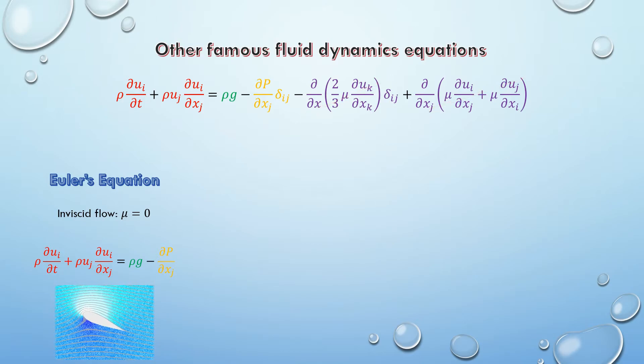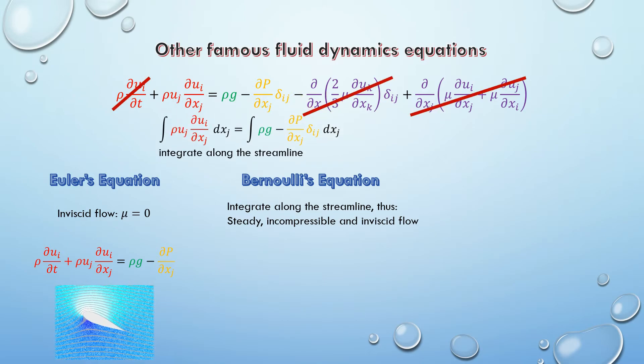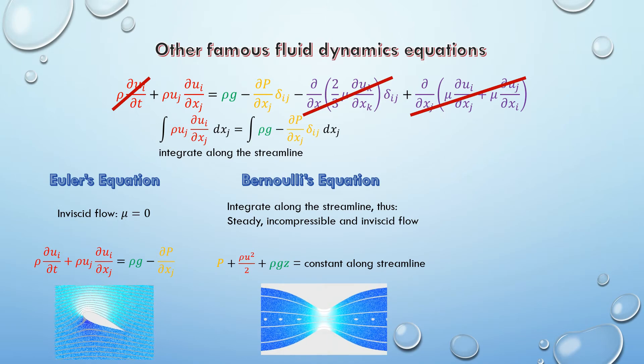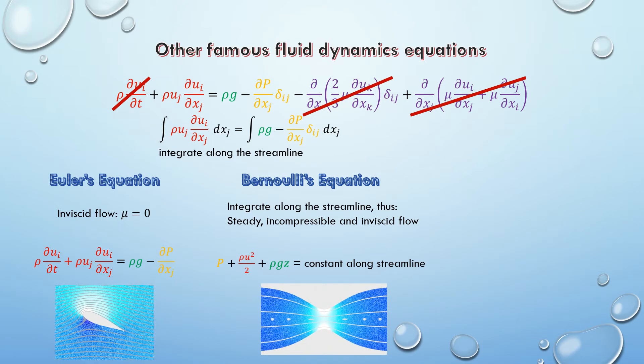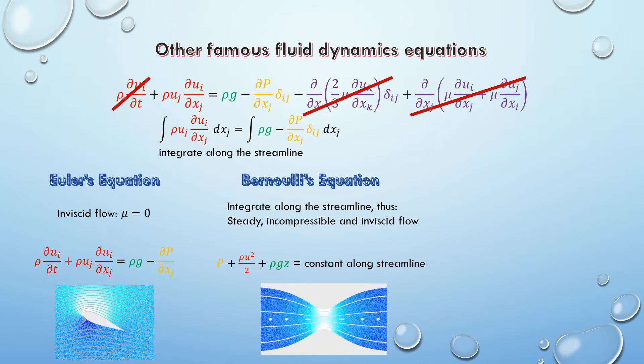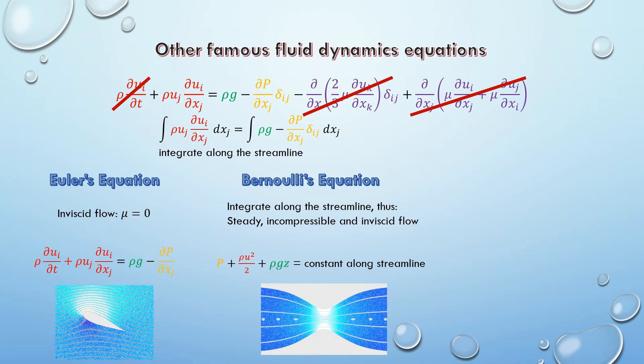We can further simplify the equation by integrating Euler's equation along the streamline, which the flow would be steady, incompressible, and inviscid. This is the Bernoulli's equation, commonly used for problems in civil engineering hydraulics, such as flow through pipes. If you would like to learn more about Bernoulli's equation, please click the link below.